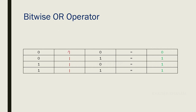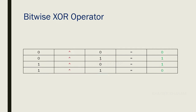The OR operator is represented by one pipe symbol (|). 0 OR 0 is 0, 0 OR 1 is 1, 1 OR 0 is 1, and 1 OR 1 is 1. This works similarly to logical OR — only if all bits are 0 do we get 0. If any one condition is 1, we get 1, and if both are 1 we also get 1. This is the bitwise OR operator.